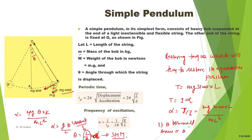Therefore, the time period is given by 2π√(displacement/acceleration), and displacement over acceleration theta/alpha equals L/g. So the time period is T = 2π√(L/g). From this, the frequency is the reciprocal of the time period: f = 1/T = (1/2π)√(g/L).